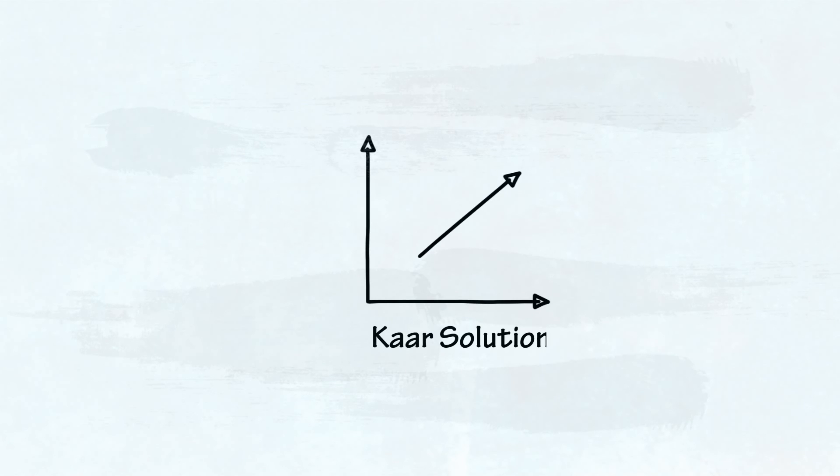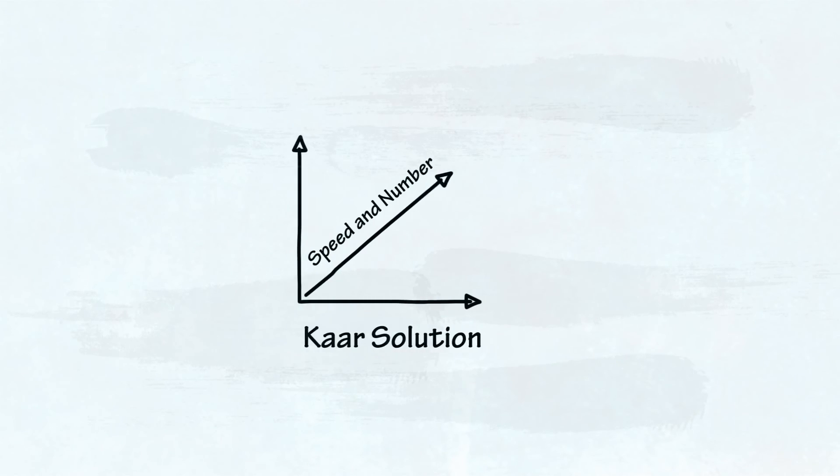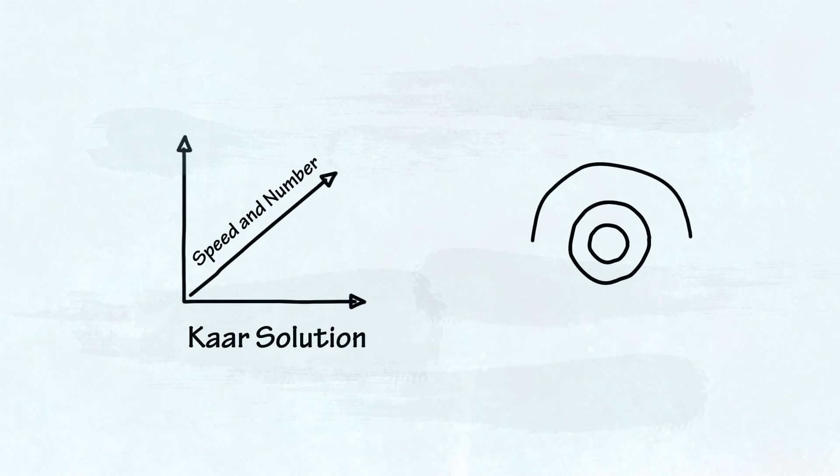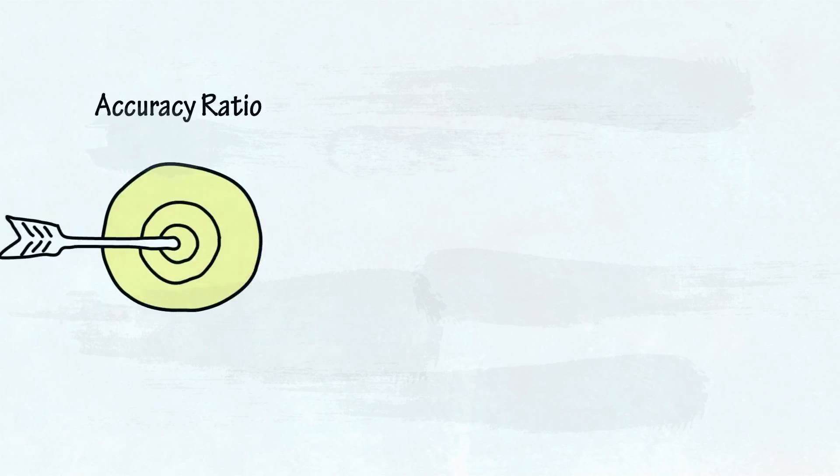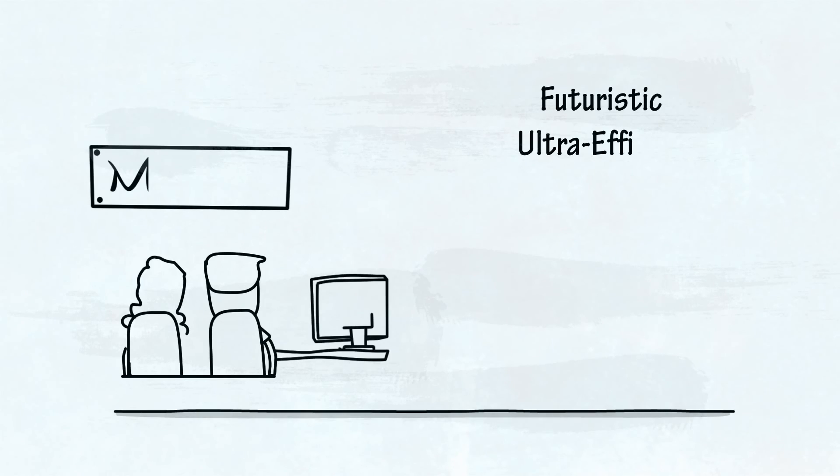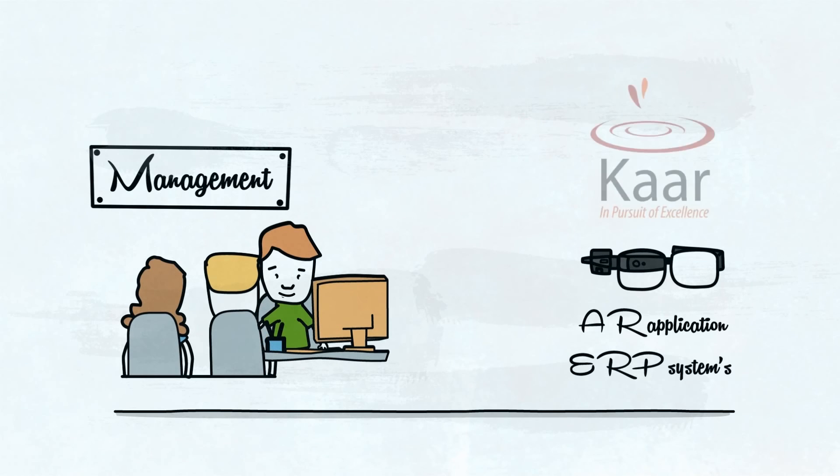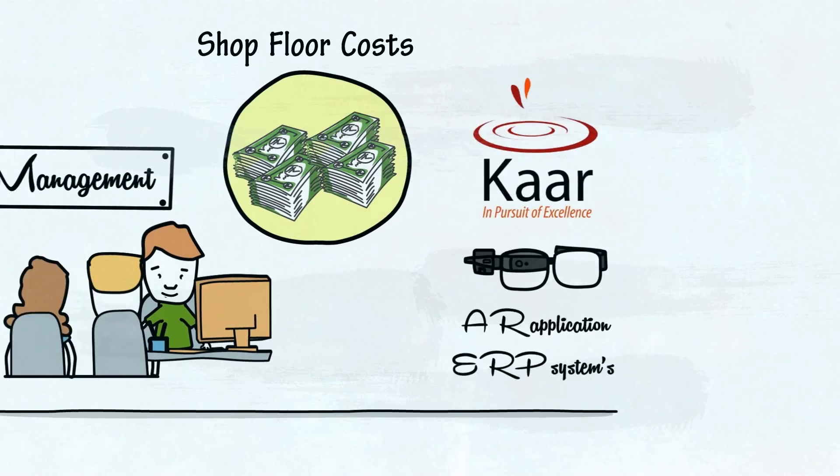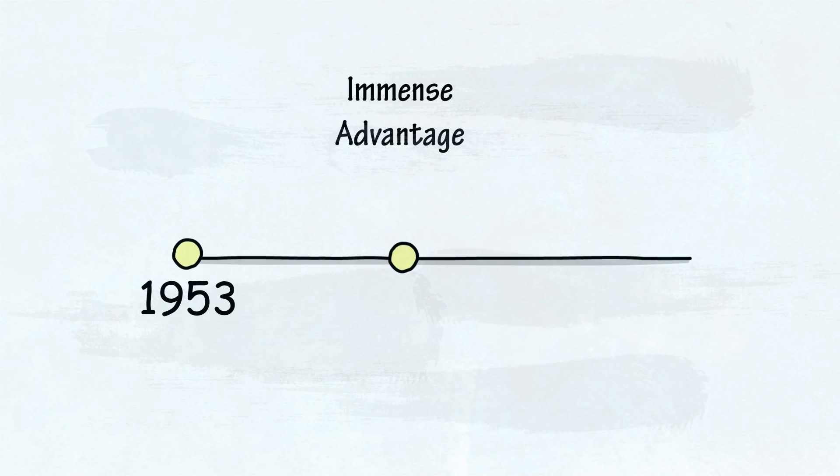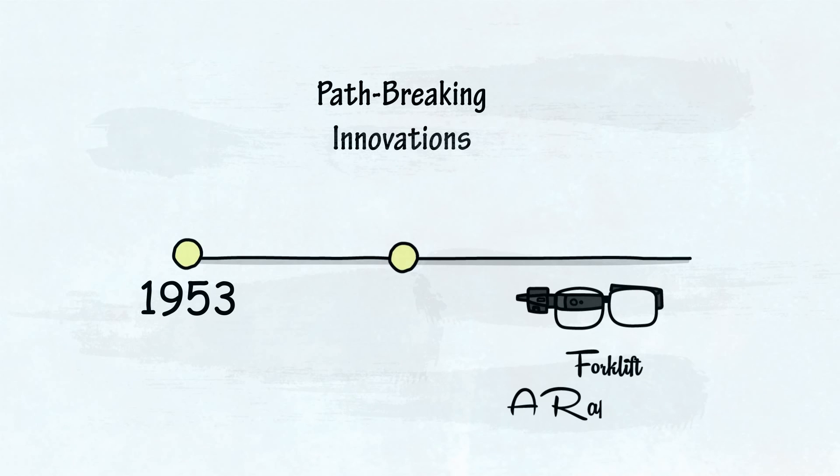On implementation of the solution, not only did the speed and number of transfers increase drastically, but the accuracy ratio rose close to one. On the whole, the futuristic ultra-efficient solution crafted and executed to perfection by Kaar resulted in manifold mitigation of shop floor costs. This proved an immense advantage and was one of the most path-breaking innovations in the client's long history.